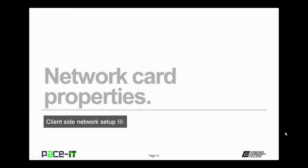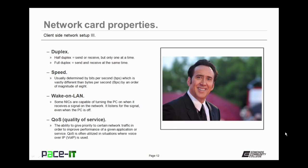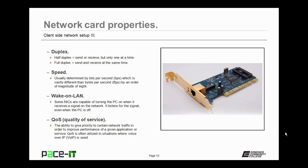Now let's move on to network card properties. When talking about NIC properties, the first thing to discuss is duplex. There is half duplex and full duplex. Half duplex means the NIC can send or receive, but only one at a time. Full duplex means the NIC can send and receive at the same time. All NICs have a rated speed, usually determined by bits per second — lowercase bps — which is vastly different from bytes per second, capital Bps. The difference is an order of magnitude of 8. You should know which speed your NIC can operate at.